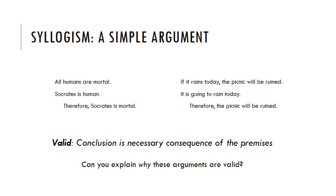Philosophers use the term syllogism to indicate a simple argument — this premise, premise, conclusion form — where you simply state the premises that you're basing your conclusion on, and then the conclusion afterwards. So here are examples of some very simple syllogisms: All humans are mortal. Socrates is human. Therefore, Socrates is mortal.